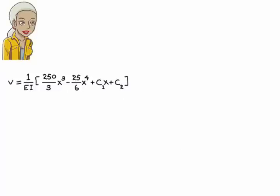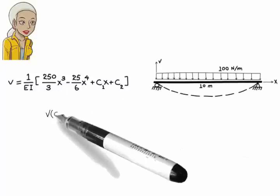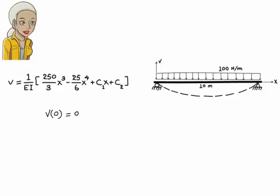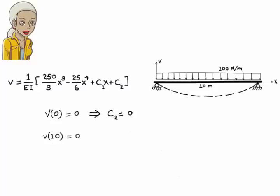To determine the integration constants, we apply the boundary conditions. They are, v at 0 is 0, no deflection at the left support. v at 10 is 0, no deflection at the right support. The first condition gives, c2 equals 0.